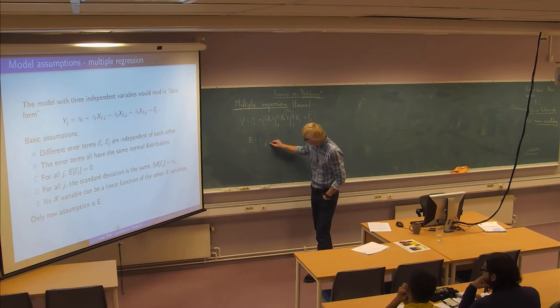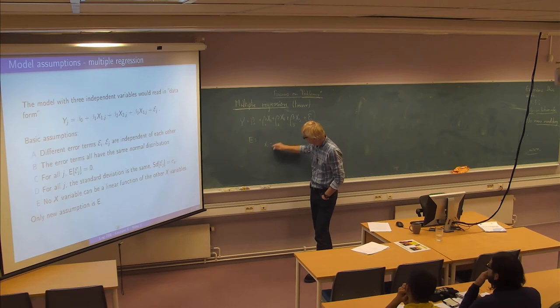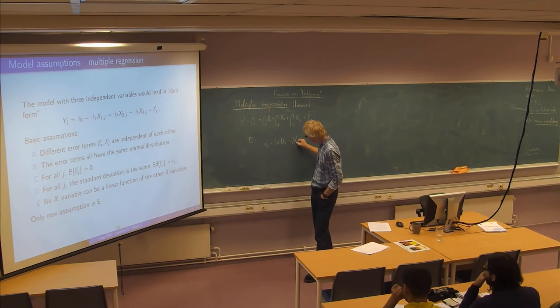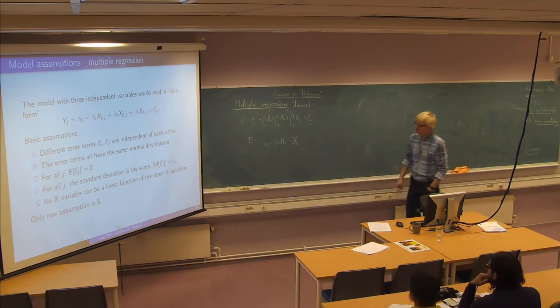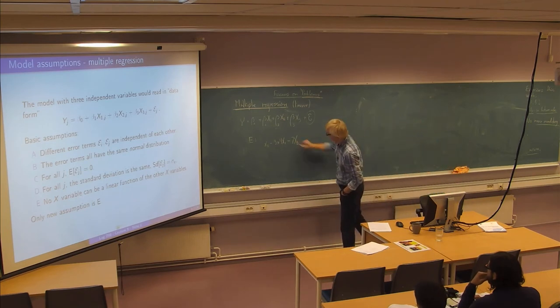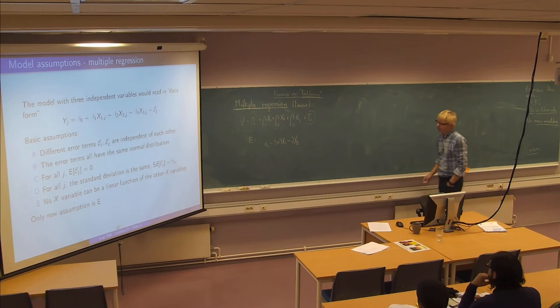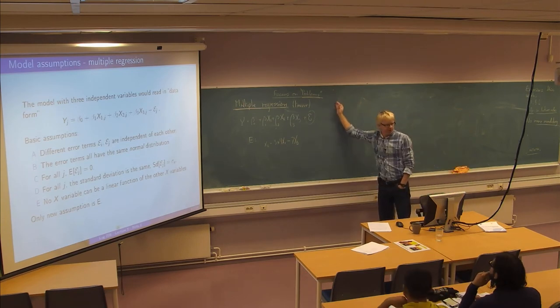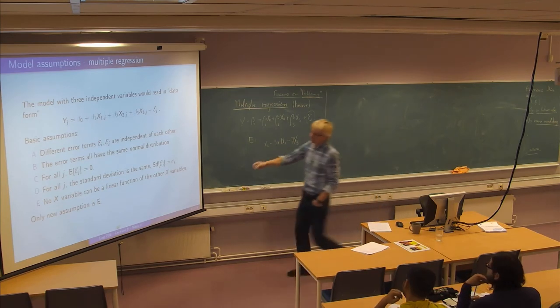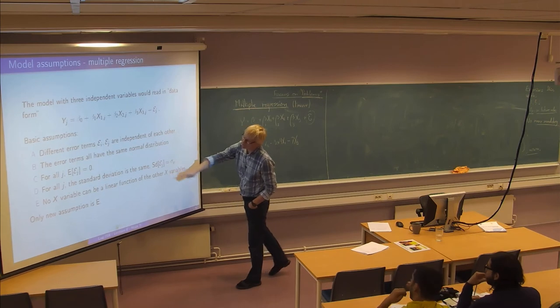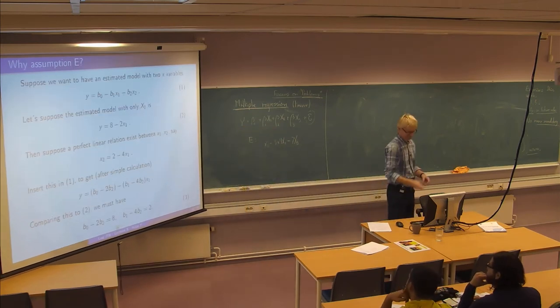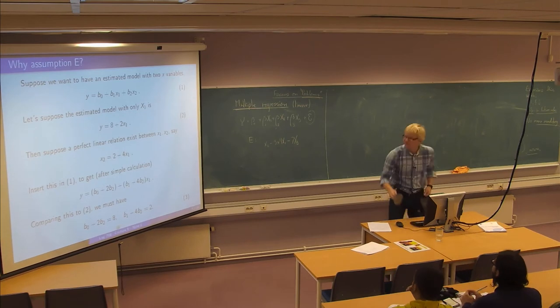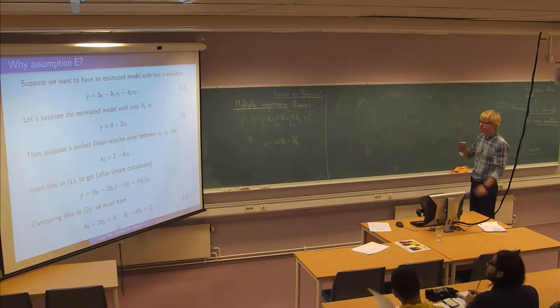So no, supposing xi is, or x2 is 3 plus 4 x1 minus 7 x2. Then x2 is a linear function of the two others and this is going to ruin the regression procedure. Because it's not going to be possible to determine the coefficient estimates actually. So I have a small example just to show you what happens if you violate this thing. And you can either appreciate it or ignore it I guess. But it's just to explain what really happens and why we need this assumption.